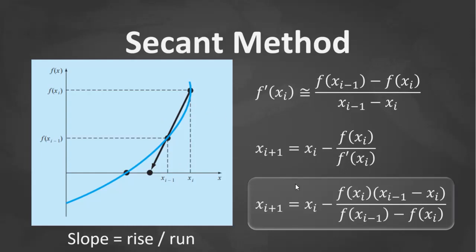Now, the Secant method requires two initial root estimates, that is xi minus 1 and xi. However, it's not necessary to bracket the true root with these two initial estimates.